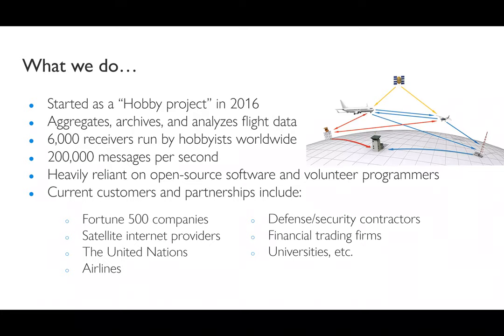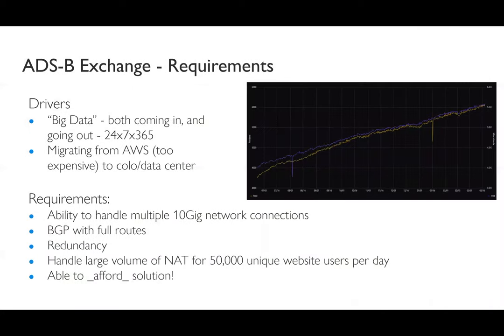As this developed, we started getting a lot of different customers — Fortune 500 companies, the UN, all sorts of different folks wanted this data. It was pretty large data, so we had some requirements. Driving this was lots of data coming both in and out, 24/7, 365. We were on AWS. Some of our instances were starting to get big, the bandwidth costs were getting expensive, and it just wasn't sustainable for a project like this. So we decided to move to a colo.